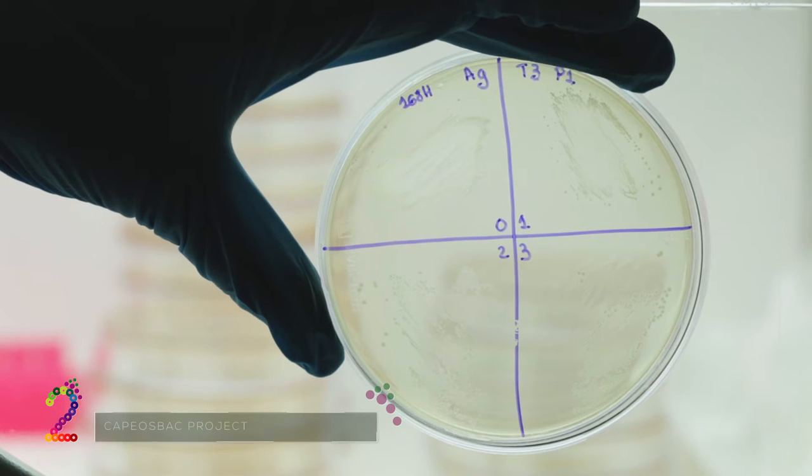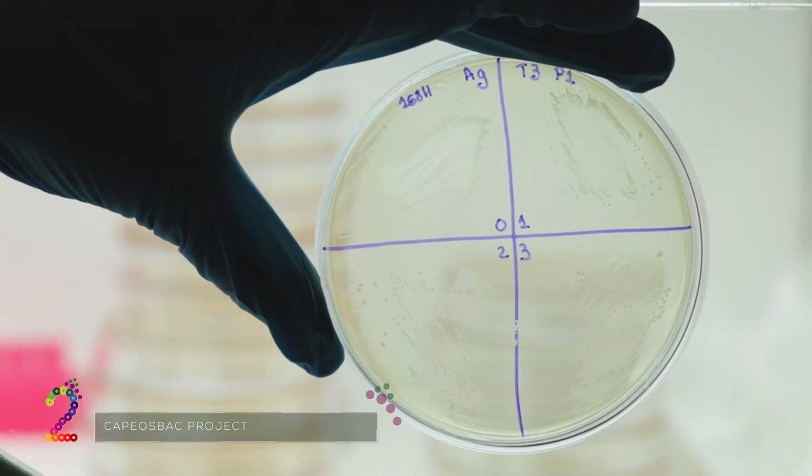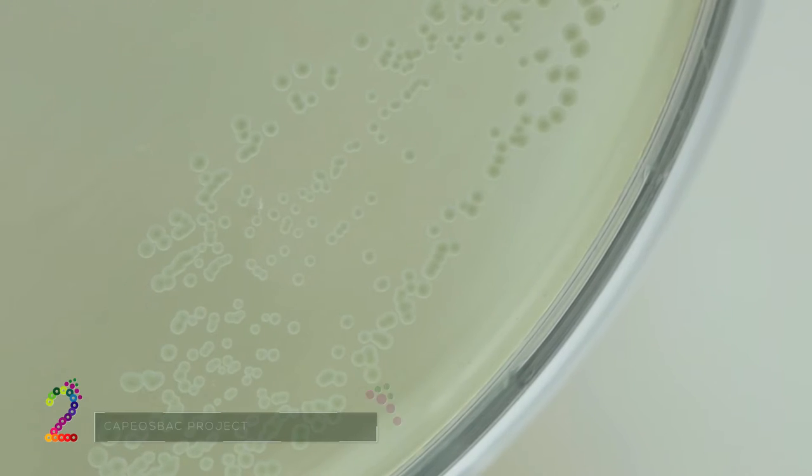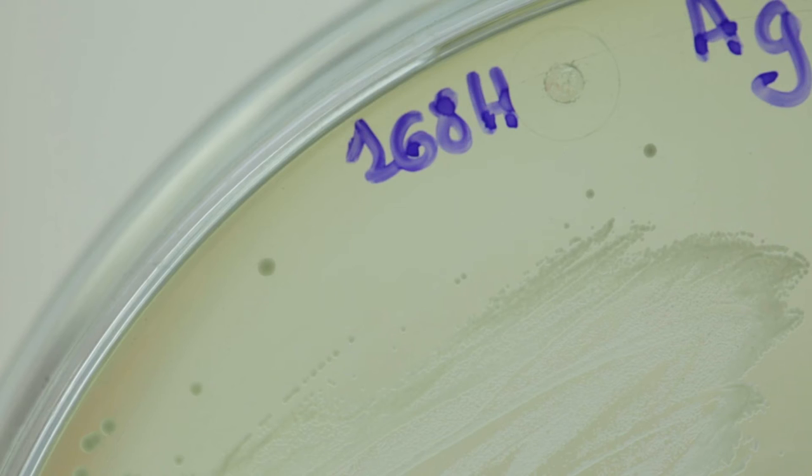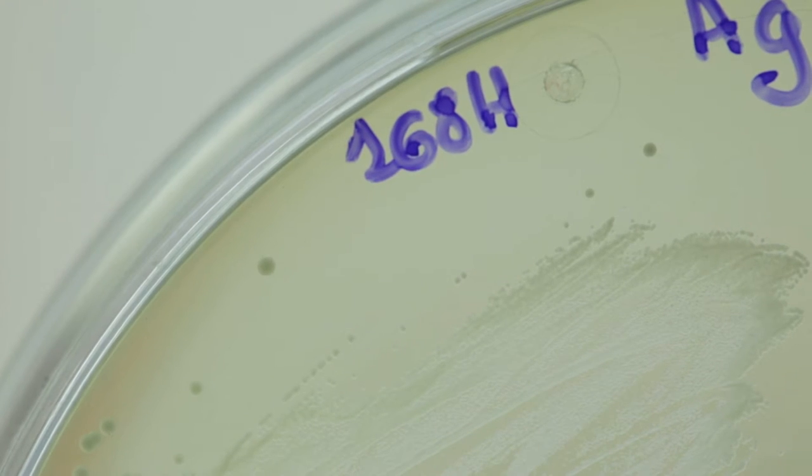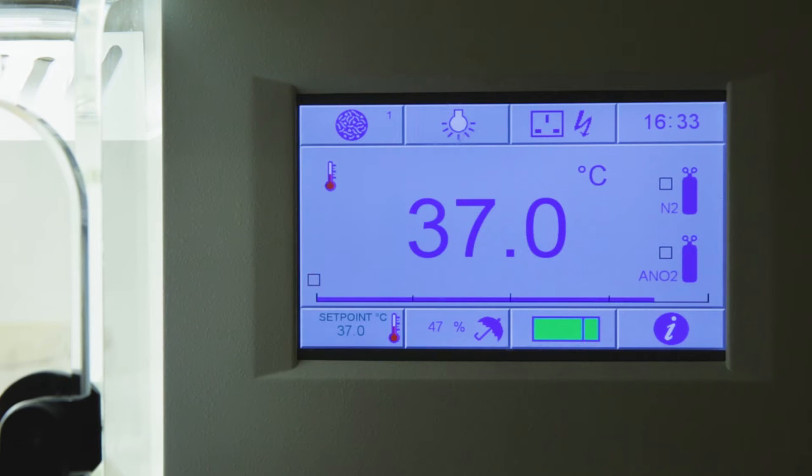But why are these developments important? Bacteria such as Faecalibacterium prausnitzii and Akkermansia muciniphila have been indicated as candidates for the next generation of probiotics, with great potential to prevent inflammatory disorders due, for example, to diet.